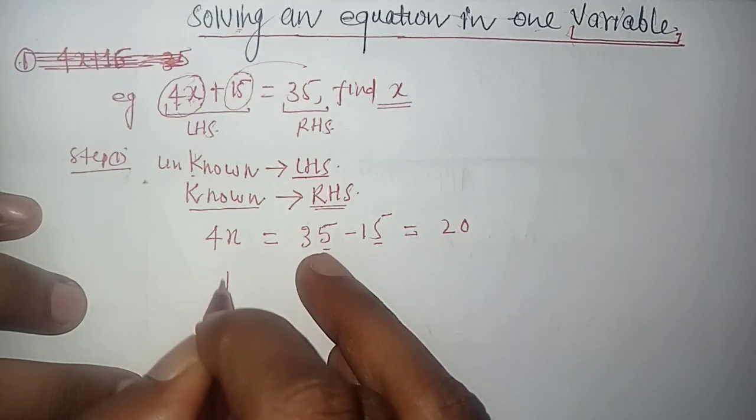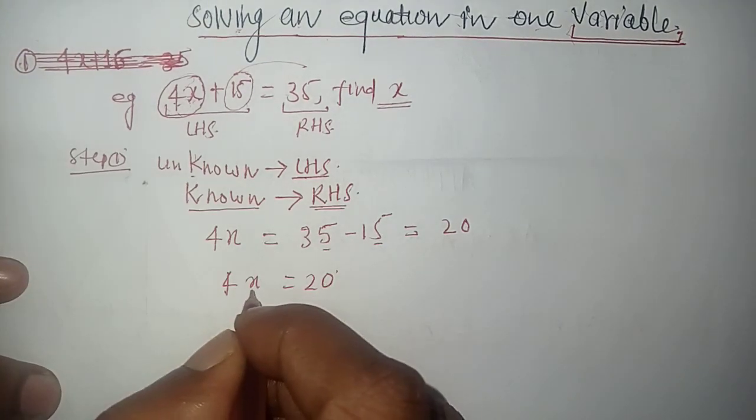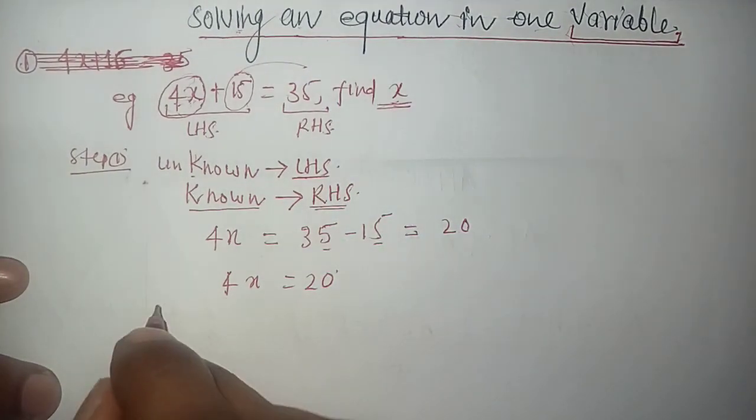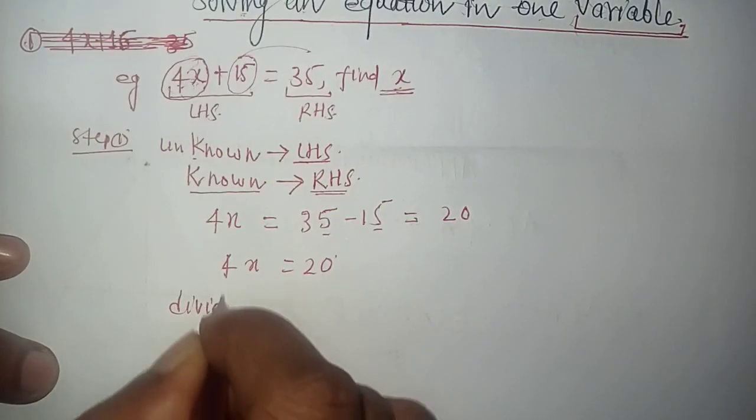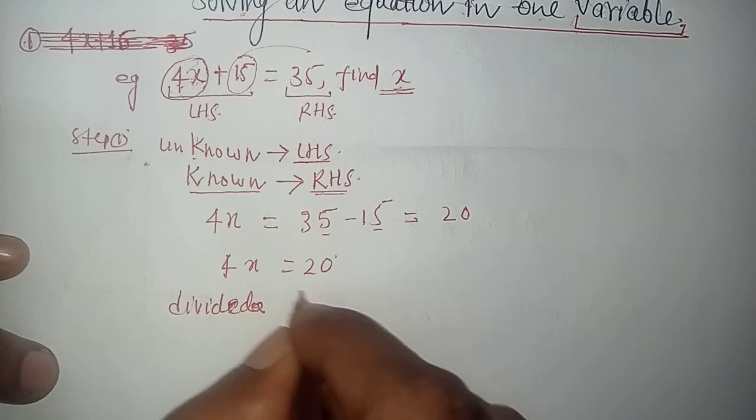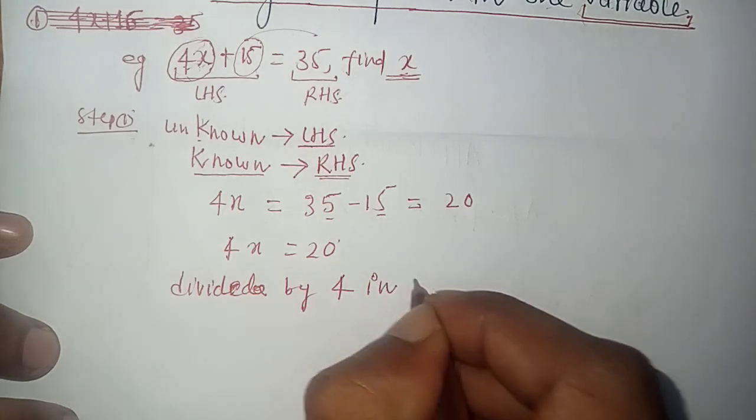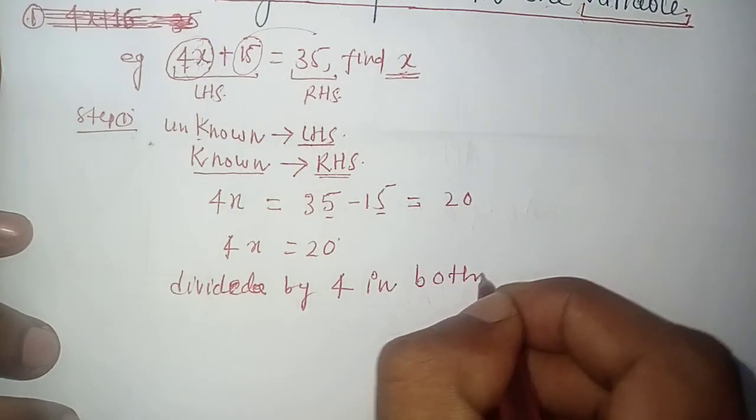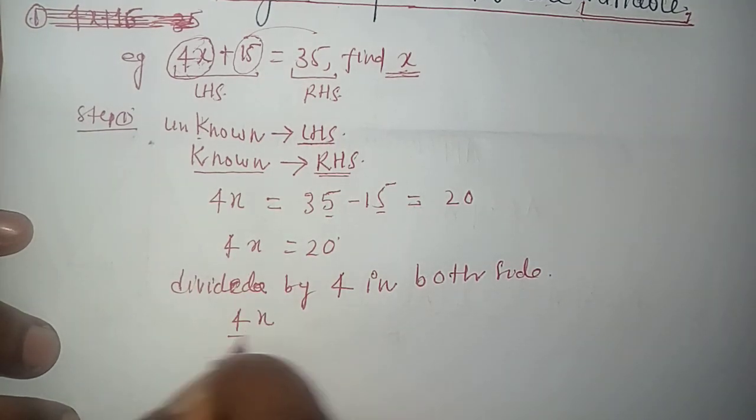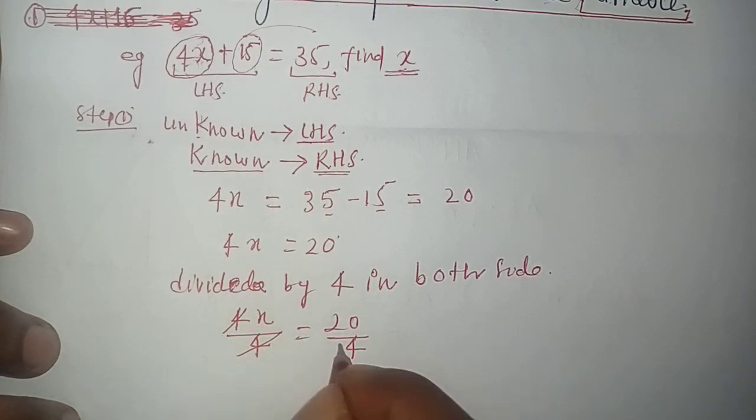Now the coefficient of x is 4. Divide by 4 on both sides. 4x divided by 4 equals 20 divided by 4. 4 cancels with 4, and 20 divided by 4 is 5.